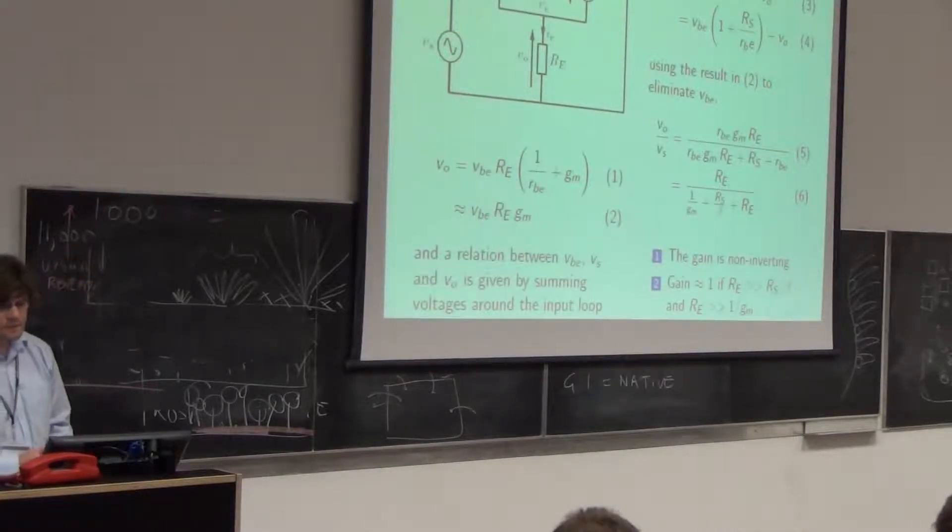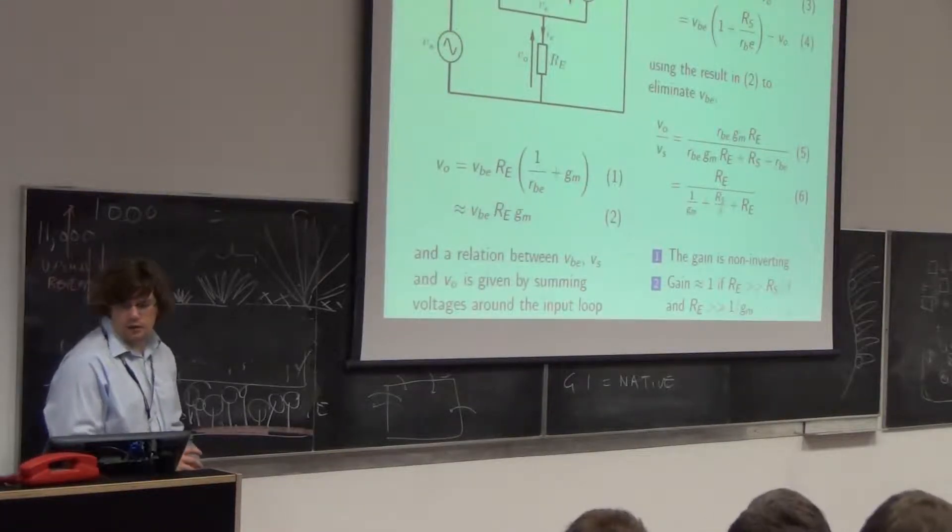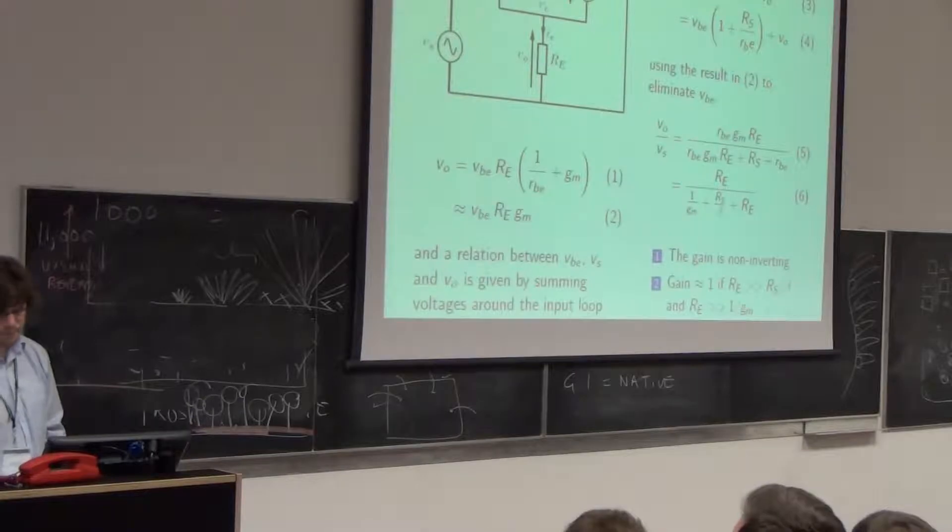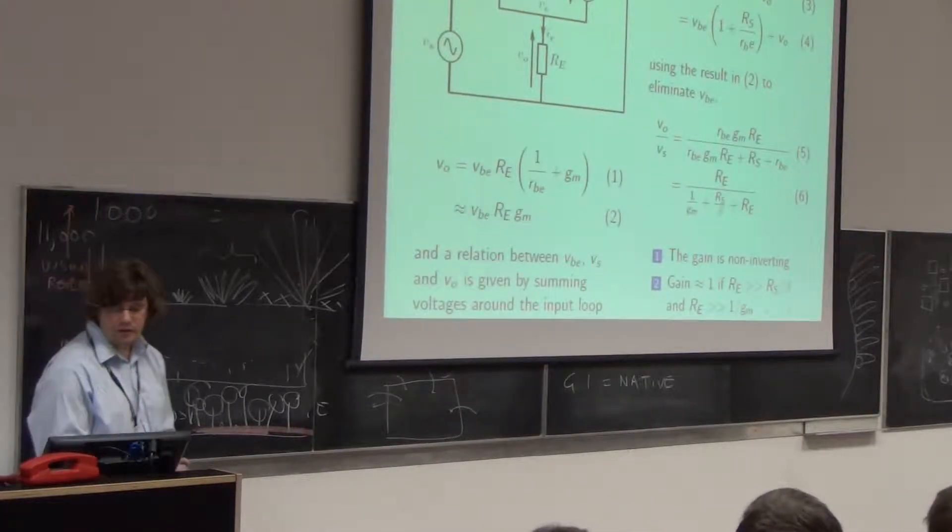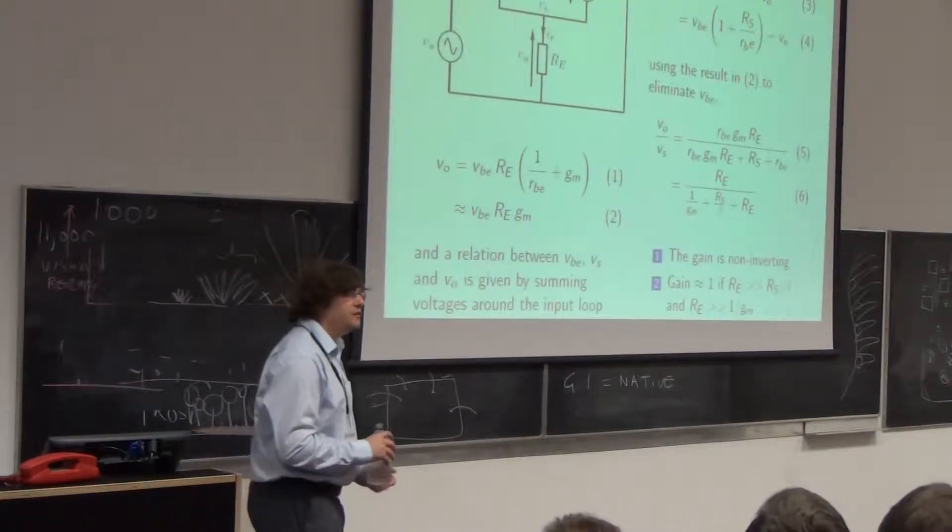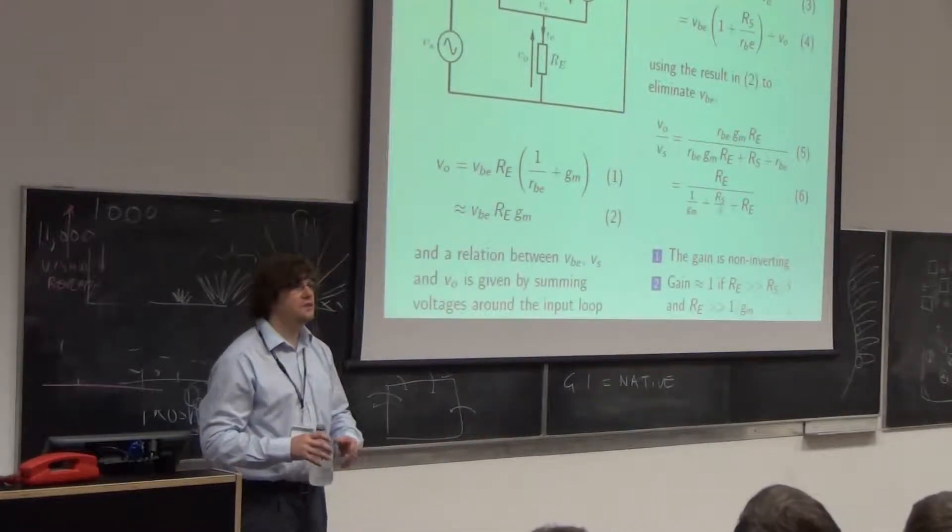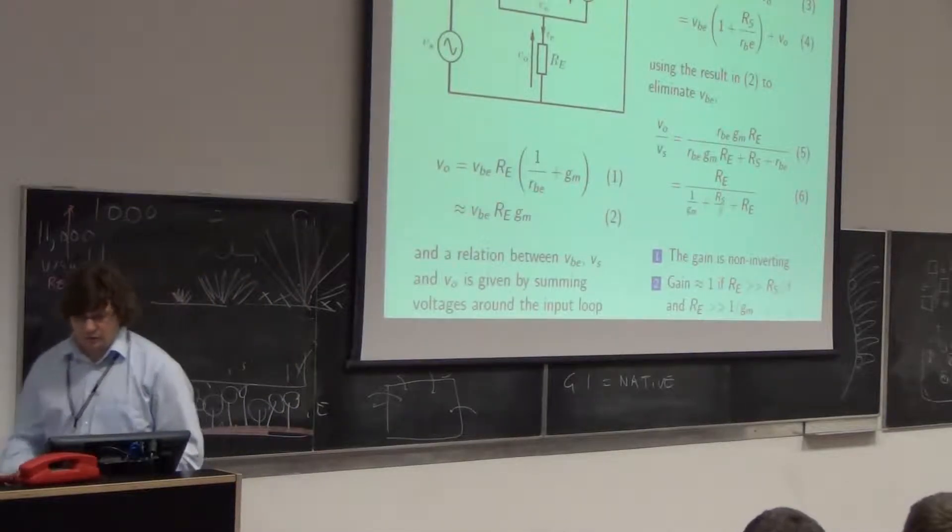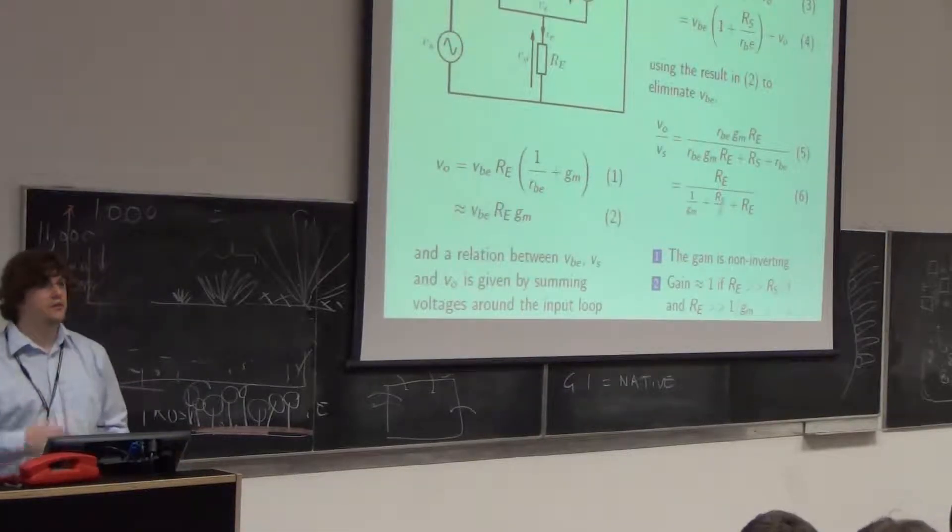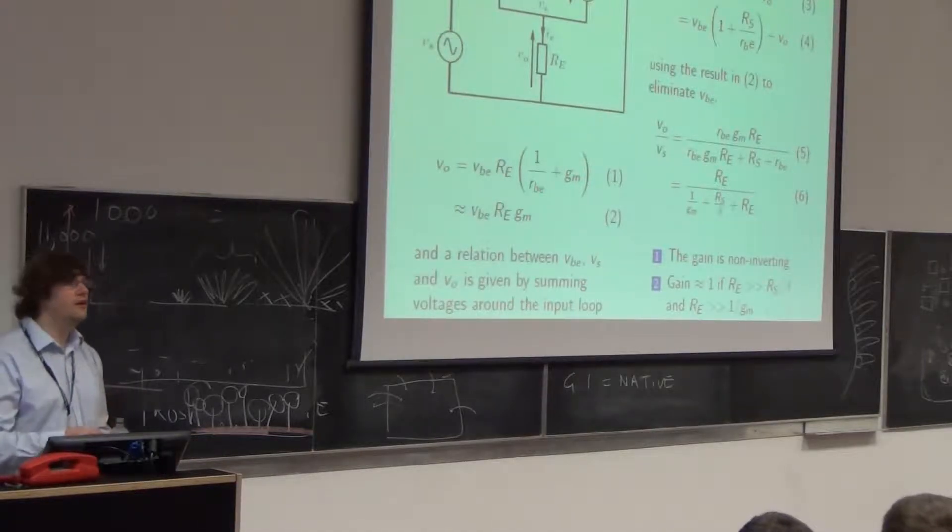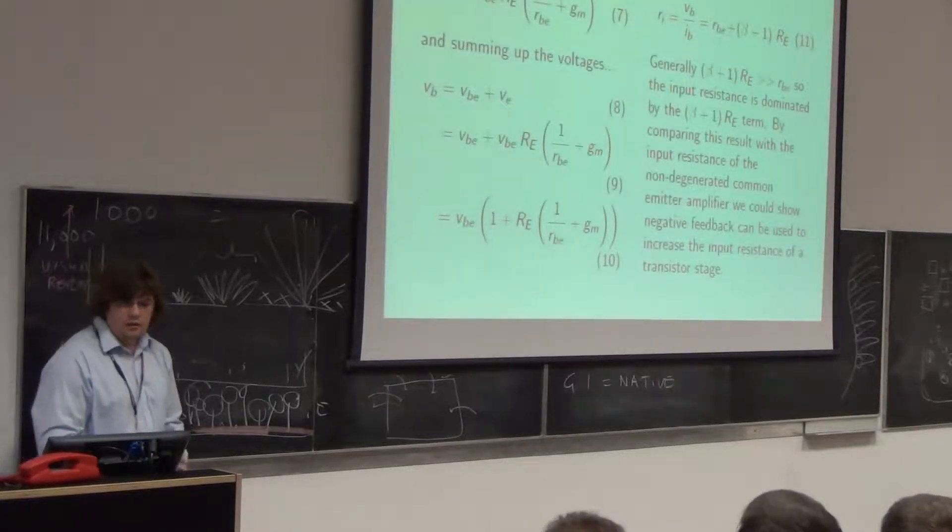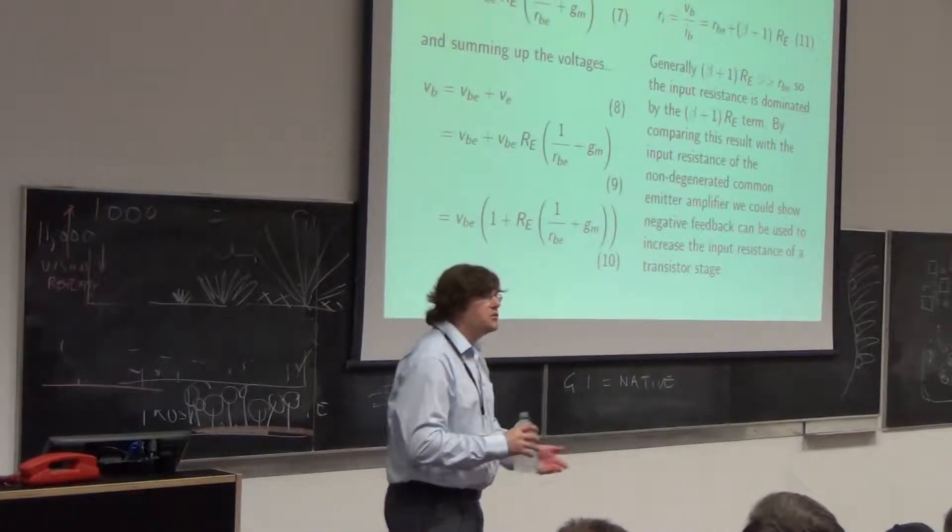First of all, there's no minus sign, so the gain is non-inverting. And if RE is much, much bigger than RS upon beta, and RE is much, much bigger than 1 over GM, it turns out that the gain will be about 1. If you don't like the idea of that, try putting in some numbers that fulfil those conditions and see what happens. Later on we'll come to look at 1 over GM as a different thing. But for the moment I'll just leave it in because I haven't described it yet. But we could, if we wanted to, call it little r, little e, where the E is subscript.